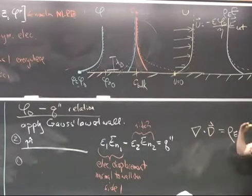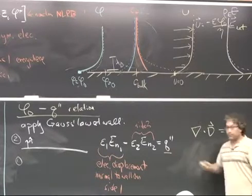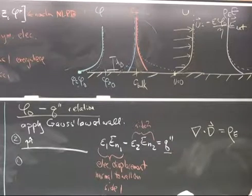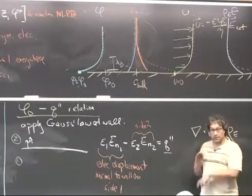And if I take the limit of the volumetric charge density as I take a control volume and make it an infinitely thin, flat pancake, now I get an aerial charge density. So this is really just Gauss's law shrunk down at an interface.